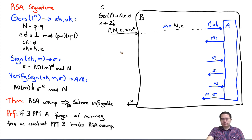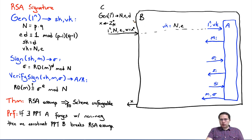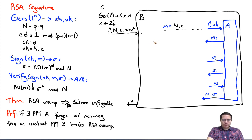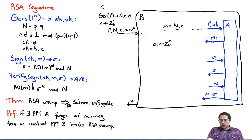Now when the adversary queries for a message M_i, think about the following: at this point B does not know D, so we can't generate a signature directly. But adversary B has the power of the random oracle. What B can do is pick some Sigma_i from Z_n star.